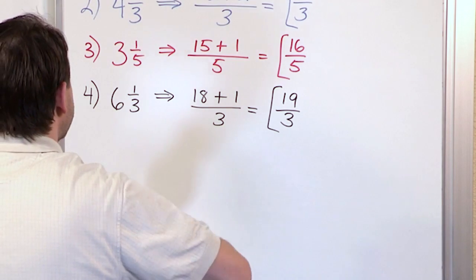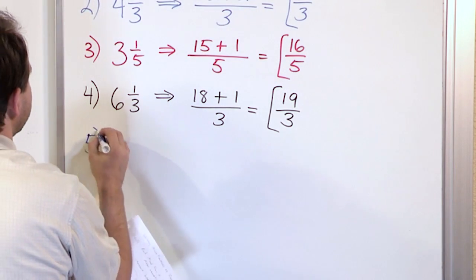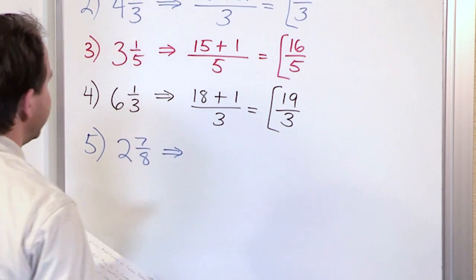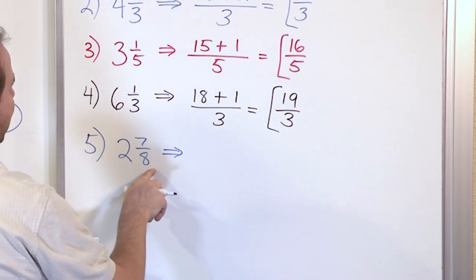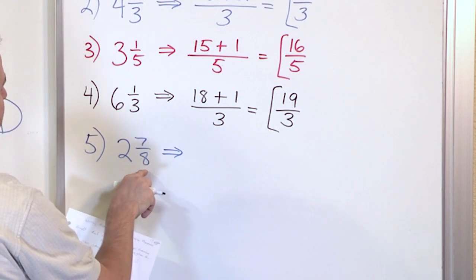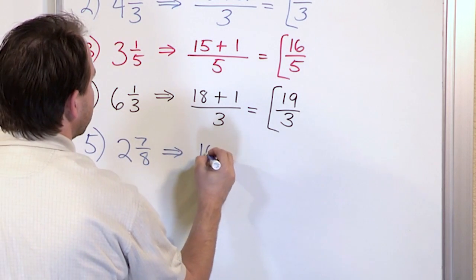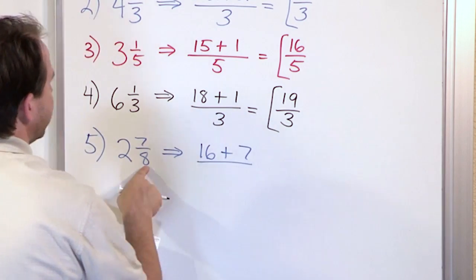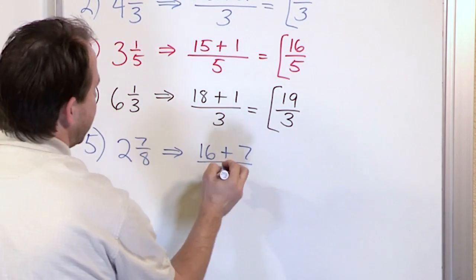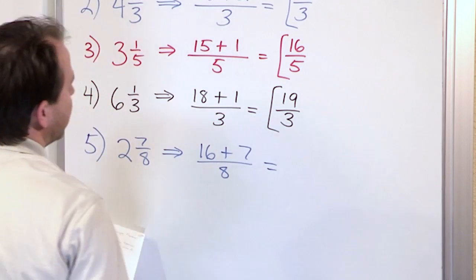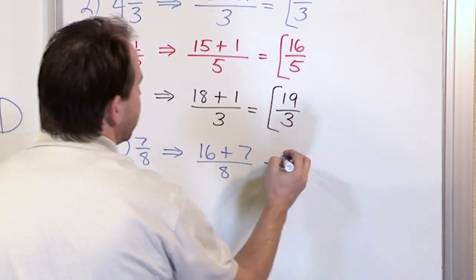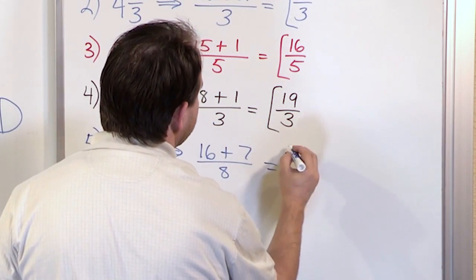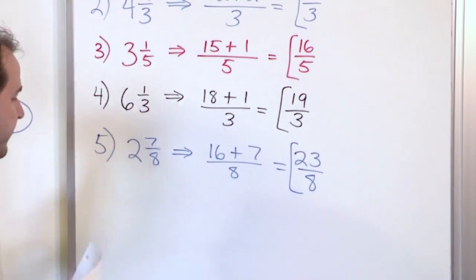We'll do one more to solidify this: two and seven eighths. Eight times two gives me 16, plus the seven from the top, over the denominator which stays the same — eight. So 16 plus seven is 23, and the eight stays on the bottom. So 23 eighths is the final answer.